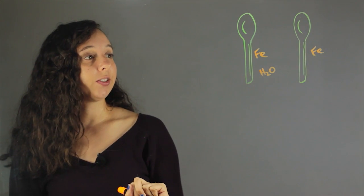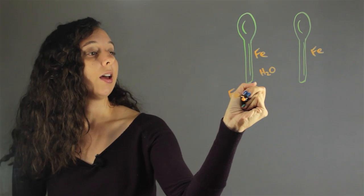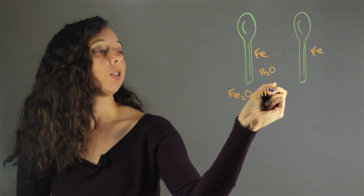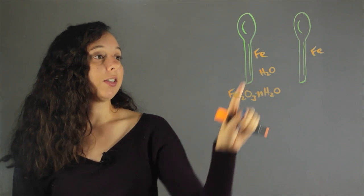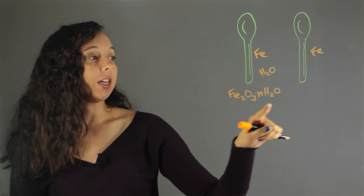So the first thing that happens is that iron oxides are formed. Iron oxides have the chemical formula—there's a bunch of different types, but basically, you have this iron reacts with water and then oxygen to form this kind of composite here.